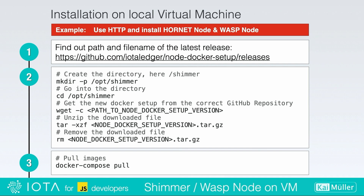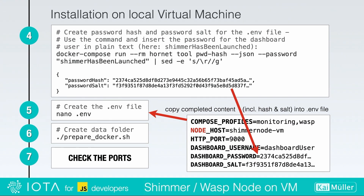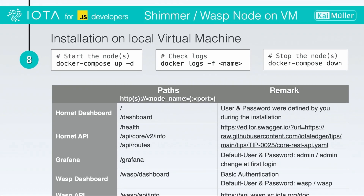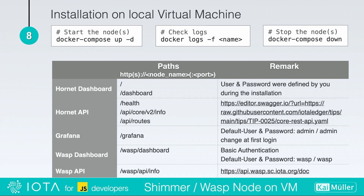Step one is that we will look up the path and the file name of the Docker setup. Step two is that we will create the directory where we will install our Docker setup. Step three is that we pull some images which are defined in docker-compose.yaml. After that we are able to use a Hornet tool to create the password hash and salt from a password given in plain text. The hash and the salt are used to complete the content of the .env file. In step five we create our .env file and fill it. Then we create the data directory and check the router if we have permitted access to the needed ports.